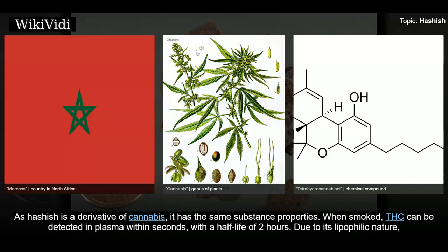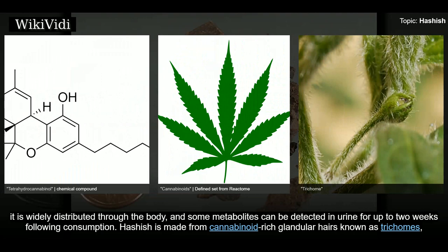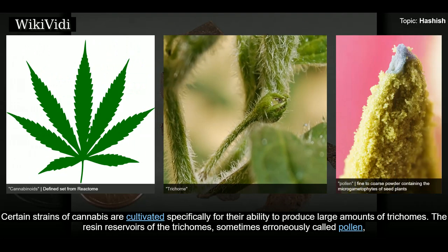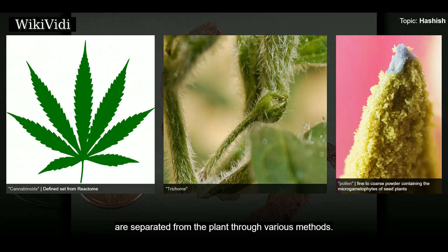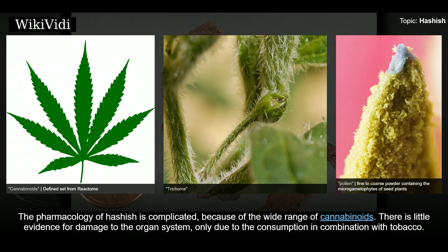As hashish is a derivative of cannabis, it has the same substance properties. When smoked, THC can be detected in plasma within seconds, with a half-life of two hours. Due to its lipophilic nature, it is widely distributed through the body, and some metabolites can be detected in urine for up to two weeks following consumption. Hashish is made from cannabinoid-rich glandular hairs known as trichomes, as well as varying amounts of cannabis flower and leaf fragments. Certain strains of cannabis are cultivated specifically for their ability to produce large amounts of trichomes.